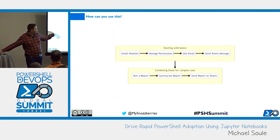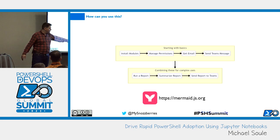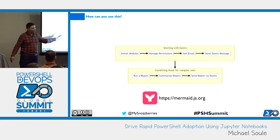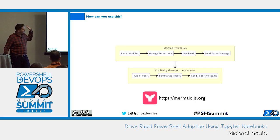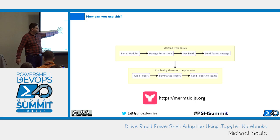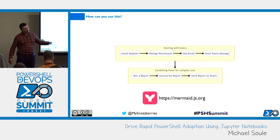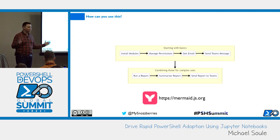We already showed the diagram — that's Mermaid. Mermaid is a JavaScript functionality that will auto-generate those visuals. It can do everything from pie charts, buyer charts, flow charts, and user flow diagrams.